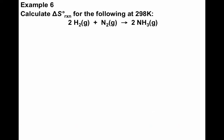So here's another example. You can try this on your own and then fast forward and check your answer if you want, or you can follow along as I go through this. So this is to calculate delta S naught of the reaction for the following at 298 kelvin. So we have 2H2 plus N2 yields 2NH3.